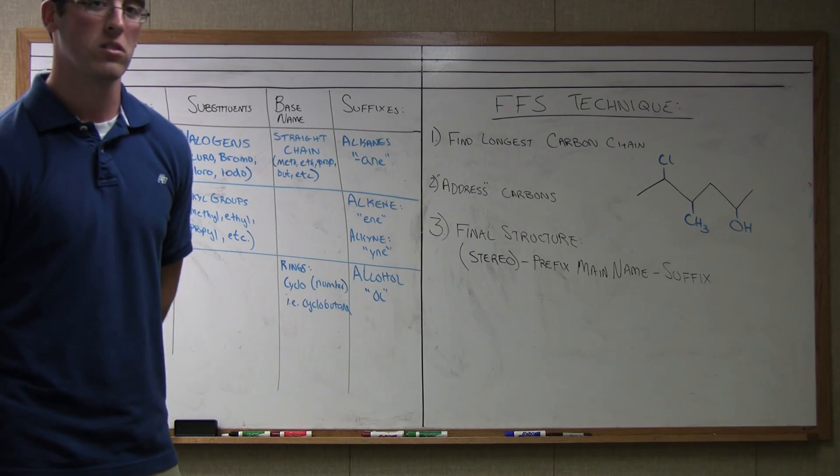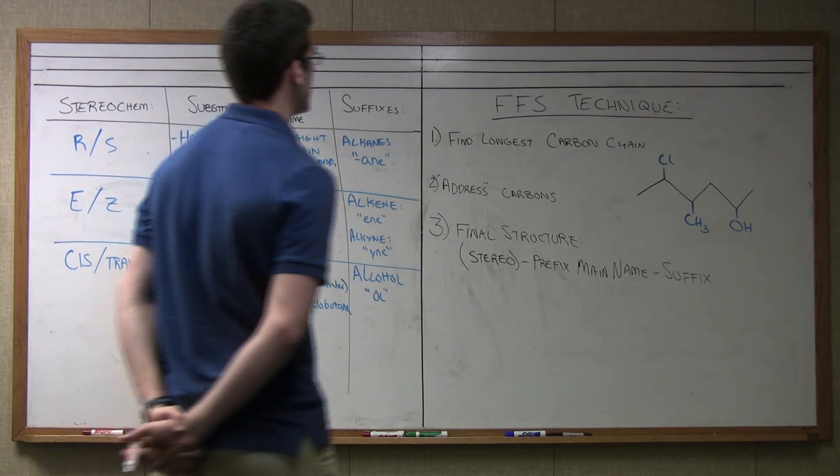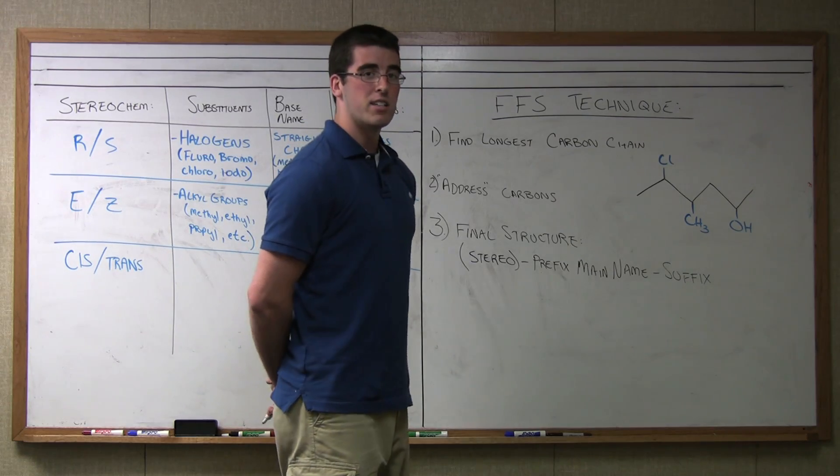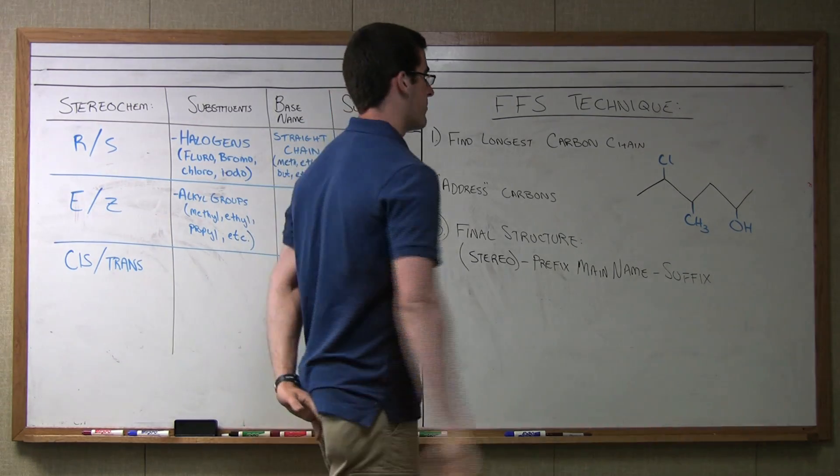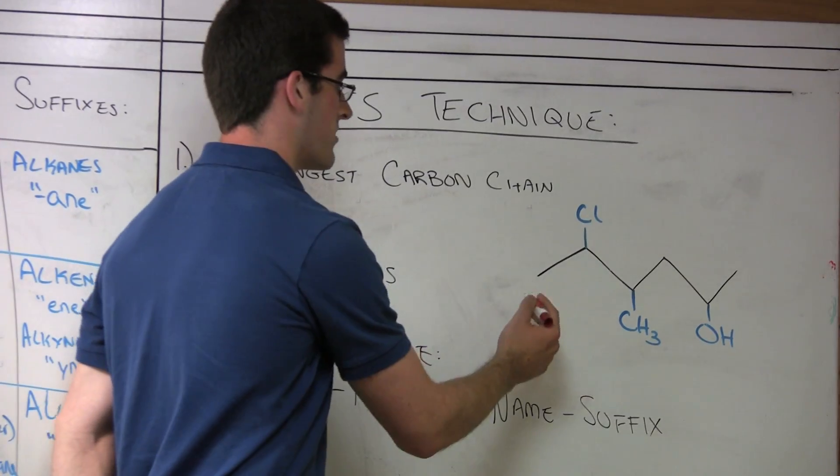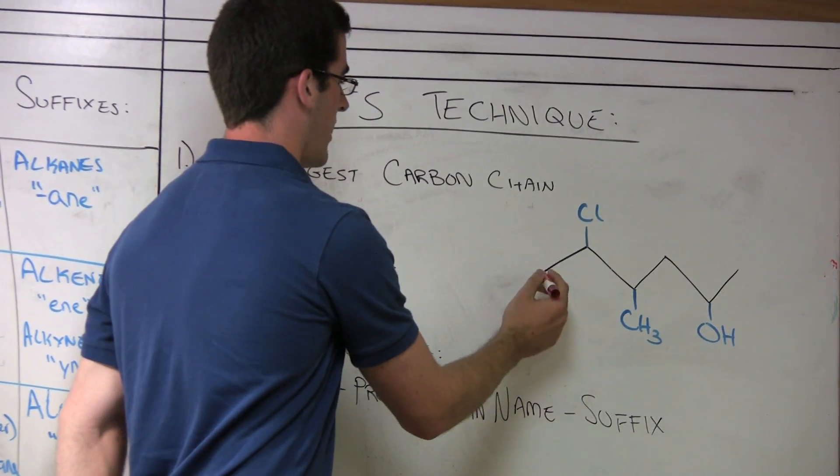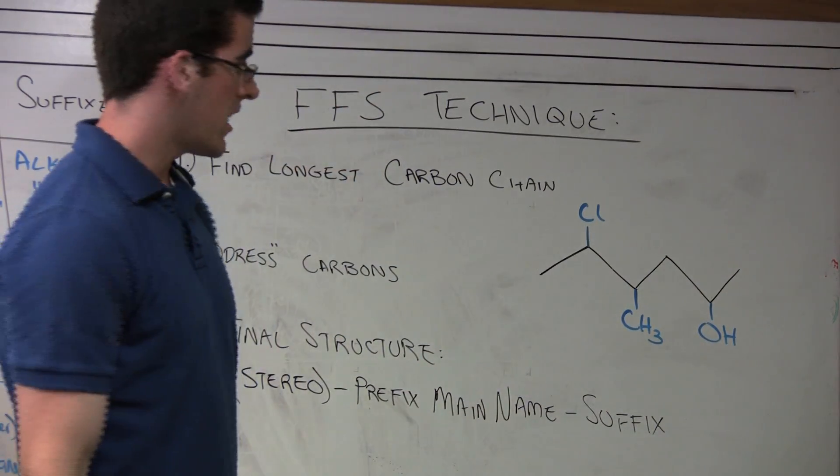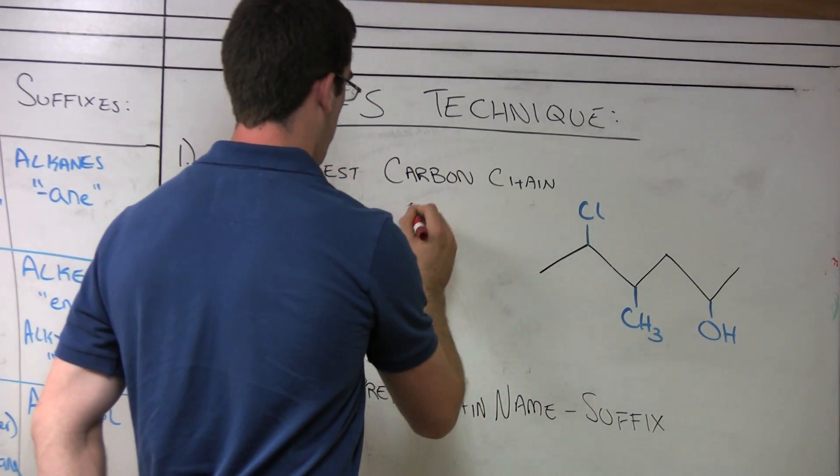First step, we're going to identify the molecule we're naming here. Step one is find the longest carbon chain. The test for that is what I call the trace test, also called the pencil test, where you trace to make sure the chain is continuous. I have here one, two, three, four, five, six carbons.